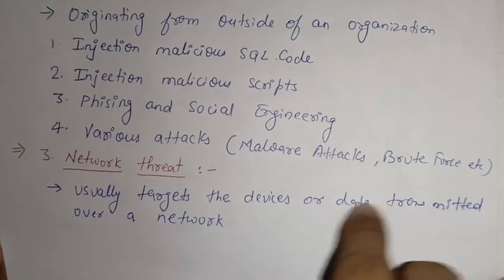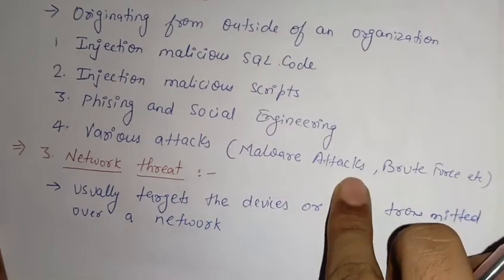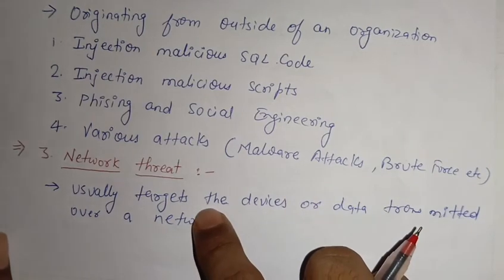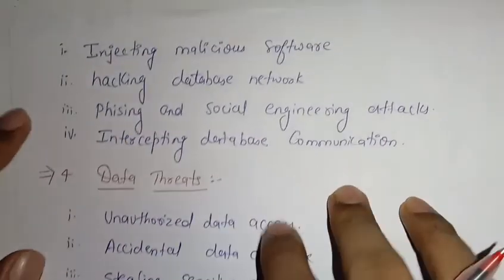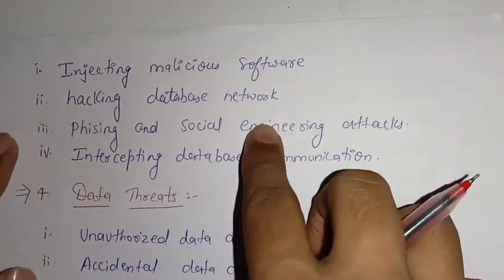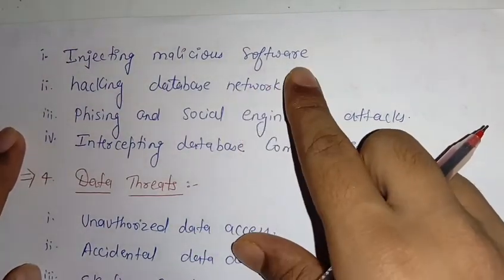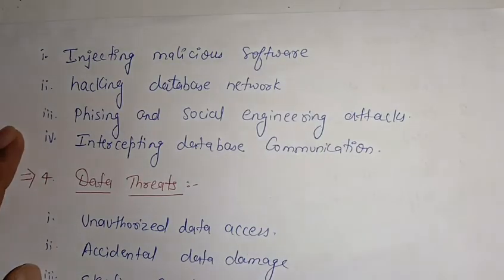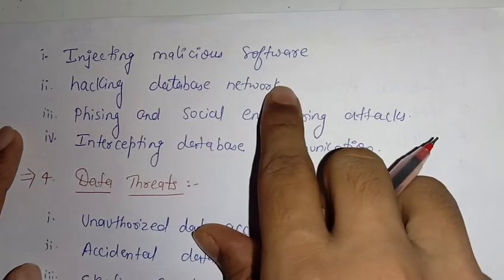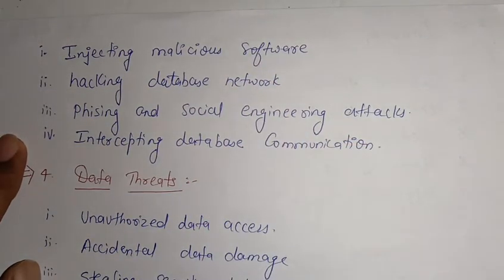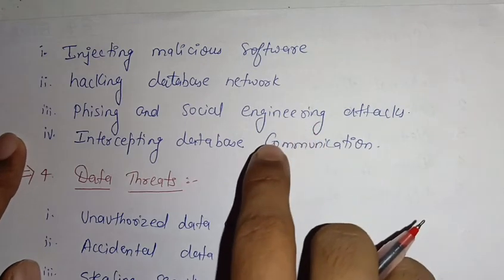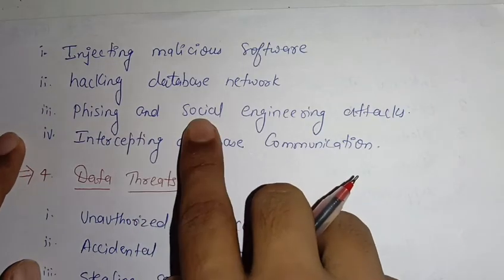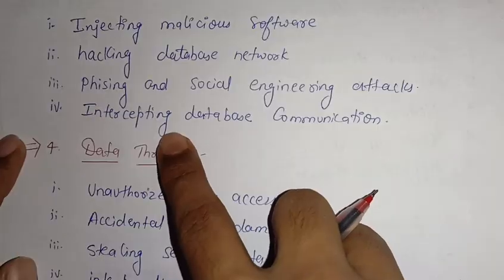The third one is network threat. It usually targets devices or data transmitted over a network, and through this network attackers try to steal database information. This happens through: first, injecting malicious software to steal information; second, hacking the database network to obtain all database information; third, phishing and social engineering attacks, which are also possible at the network level; and fourth, intercepting database communication.